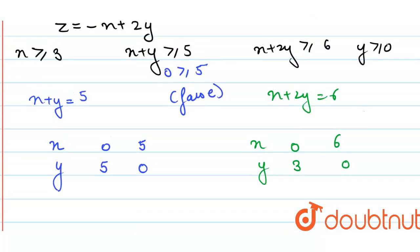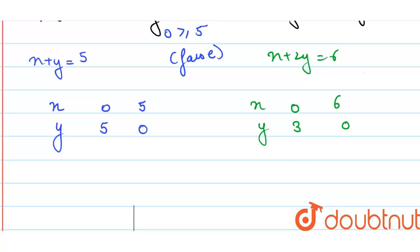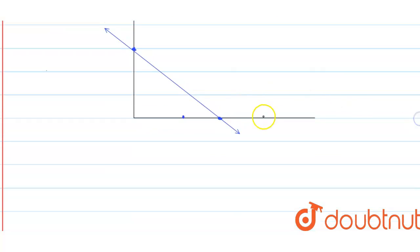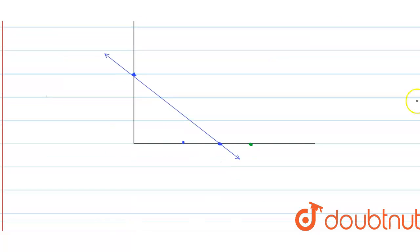Now the points 0, 3 and 6, 0. Your point 6, 0 should be somewhat here, and your point 0, 3 should be somewhat here. Let us join these points.